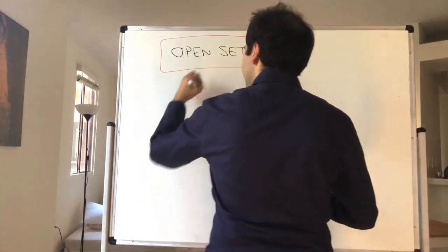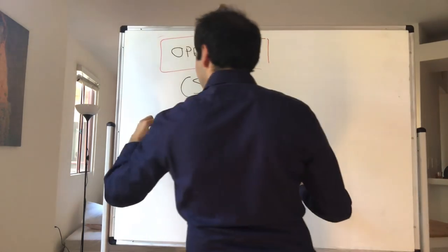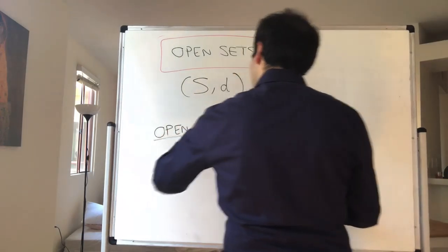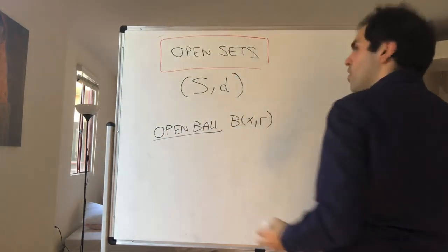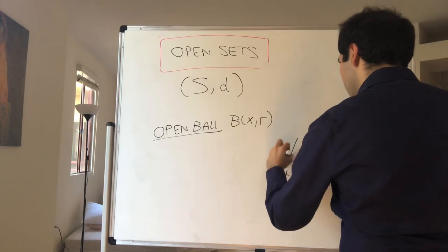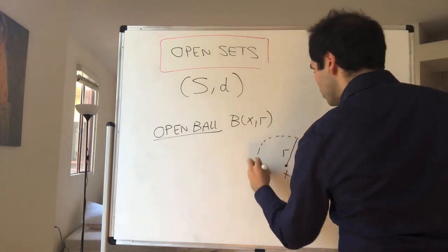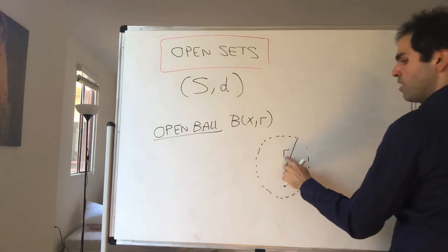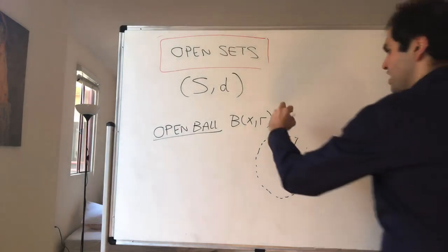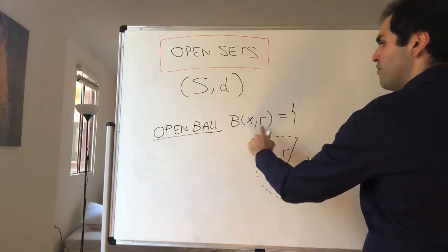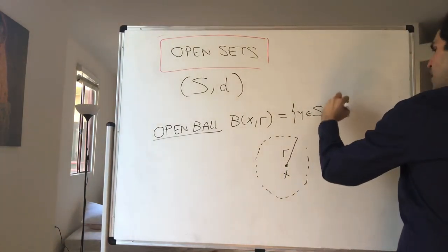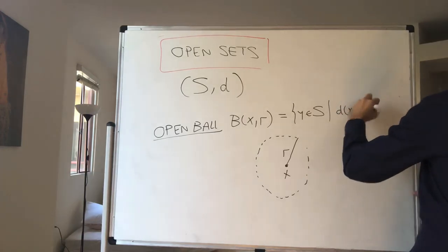Let S be a metric space. What does it mean to have an open ball? Think about this in terms of R^k. What is the ball centered at x with radius r? It's a set of points that are at most r away from x. And in fact, it's the same definition here: the open ball centered at x with radius r is just the set of points y such that the distance between x and y is less than r.